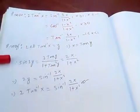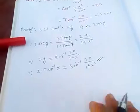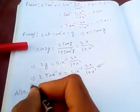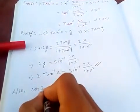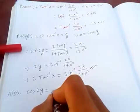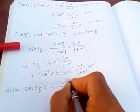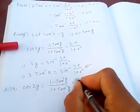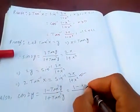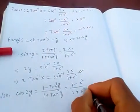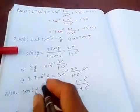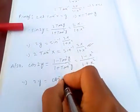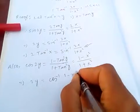For the second part, we use cos of 2y. The double angle formula gives cos of 2y equals 1 minus tan squared y over 1 plus tan squared y. Since tan y equals x, this becomes 1 minus x squared over 1 plus x squared. Transferring cos inverse to the right hand side, we get 2y equals cos inverse of 1 minus x squared over 1 plus x squared.